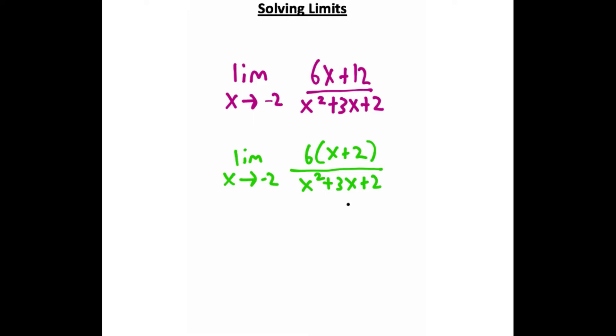And I can do that by thinking about what terms are going to add to give me that three and multiply to give me that two, and if I think about it, two and one will do just the trick. So I can factor that bottom expression by taking x plus two times x plus one, because two and one will add to give me three and multiply to give me two. If you refoil these expressions back together, you'll get this one.